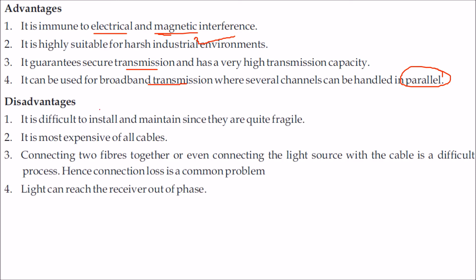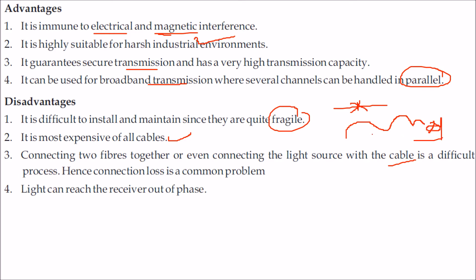The disadvantages are that it is very difficult to install and maintain — maintenance is very high because the fiber is quite fragile, with glass inside. It is also the most expensive of all cables compared to coaxial or twisted pair cable. Connecting two fibers together, or even connecting the light source to the cable, is quite difficult, making connection loss a common problem. If light reaches the detector out of phase, the signal will be lost.